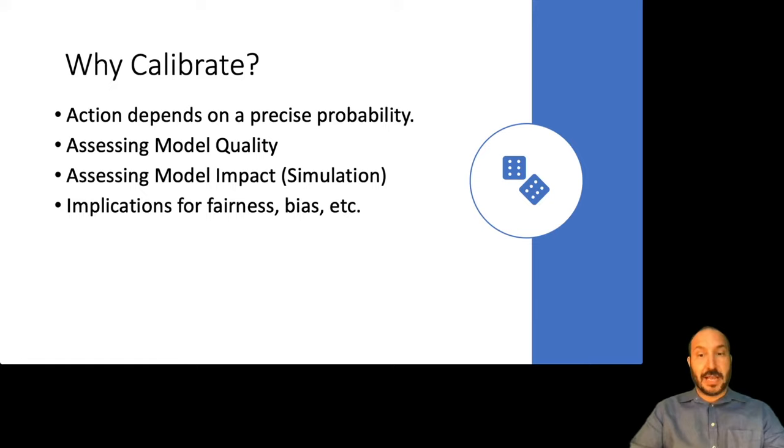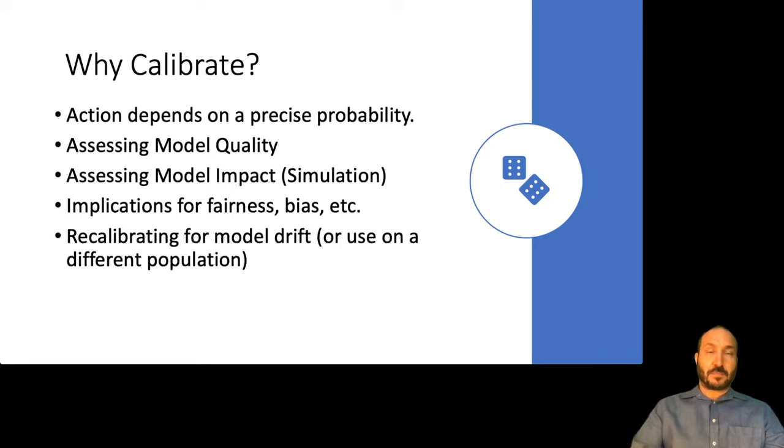Calibration also has a lot of implications for fairness and bias and so forth. So one big topic nowadays is about models that perform worse on certain kinds of people than others. Well, if the model is not well calibrated, it's hard to make those judgments. It's hard for someone looking at the results of the model to say, hey, this model is less confident in these cases than it is in these other cases. You would have to wait until you got the answers back and saw that, oh, in these cases, the model is making a lot more errors than these other cases. But if the model is well calibrated, you kind of know ahead of time that this model is not going to perform as well on these cases.